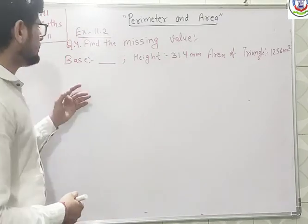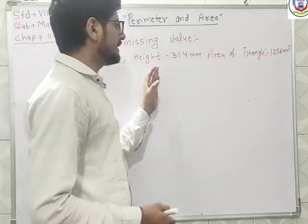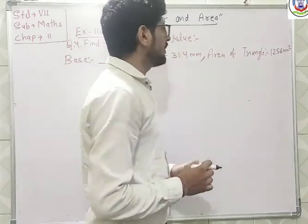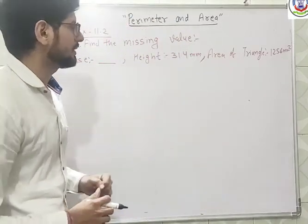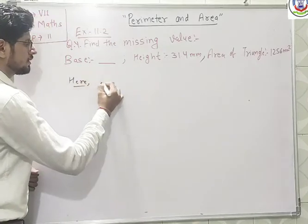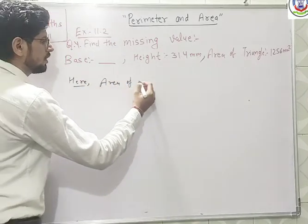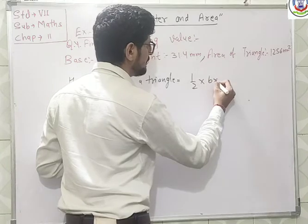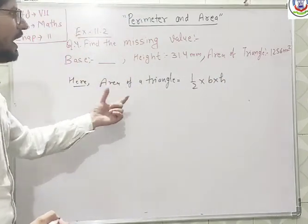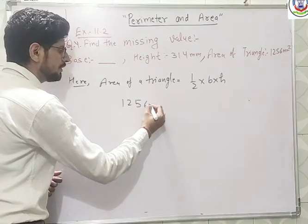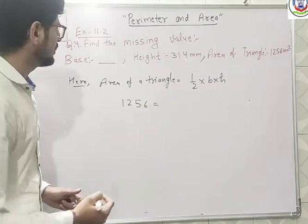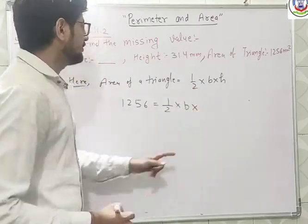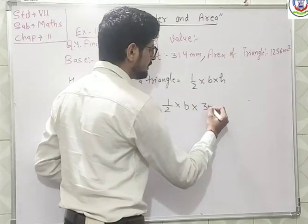Now our next question is: we have to find the base of the triangle. We have given height that is 31.4mm and area of triangle is equal to 1256 mm². We know that area of triangle is equal to 1/2 multiply base multiply height. So we have given the area of triangle is 1256, equal to 1/2 multiply base — base we have to find — and height that is 31.4.